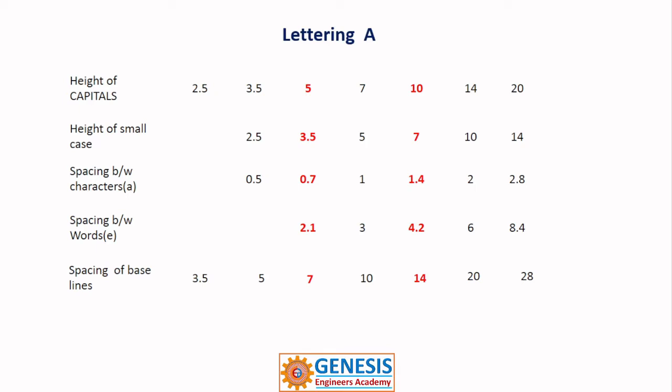This is lettering A type. In this case, height of capitals minimum is 2.5, next 3.5. You remember these two. 2.5 double is 5, 7 that is 3.5 double. If you go next step this is 10, 14. Generally we in drawing sheets follow highest is 10 or 14.